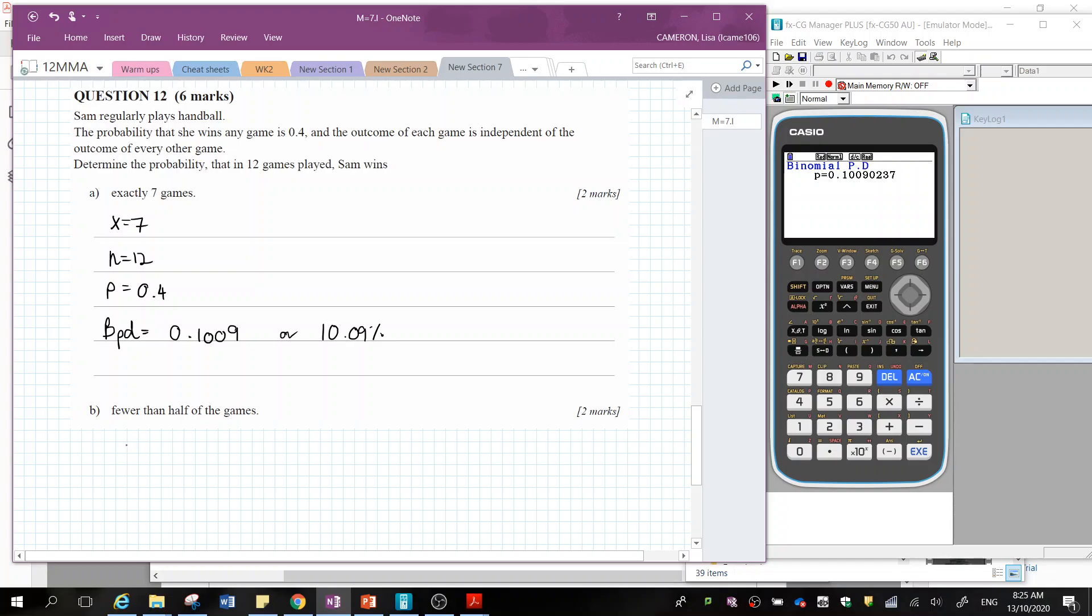Okay, the next one we're looking at is that it's fewer than half of the games. So that means that it's not half or fewer, it's fewer than half. So half of the 12 games would be six and we are not including the six. So that means that my lower range is going to be zero. My upper range is going to be five. The number of trials is going to be 12 and my probability is still 0.4.